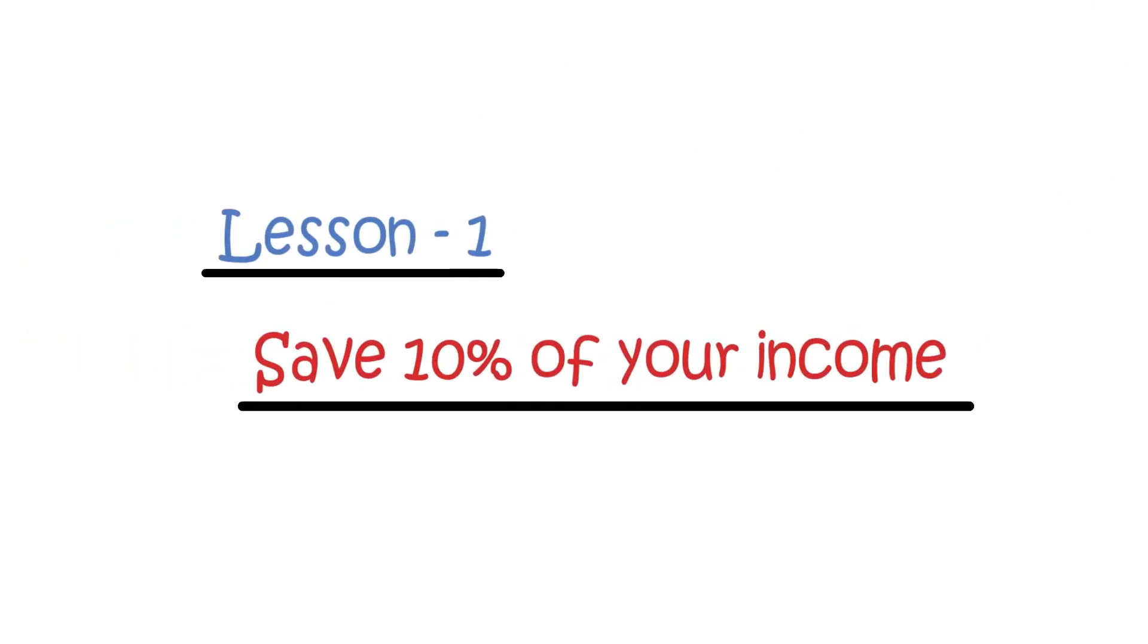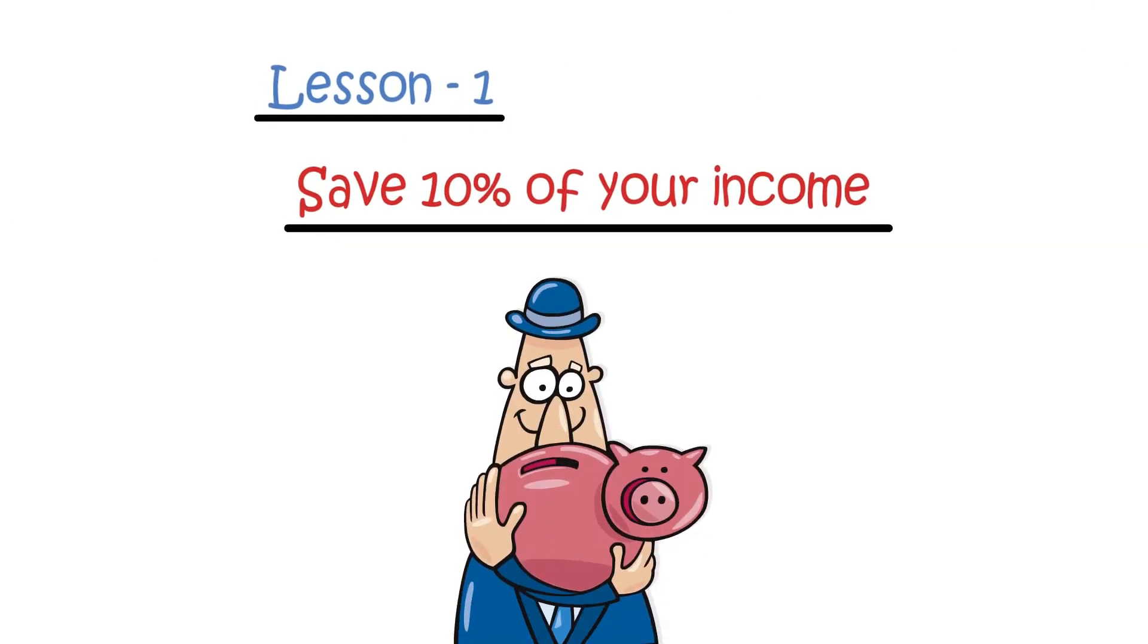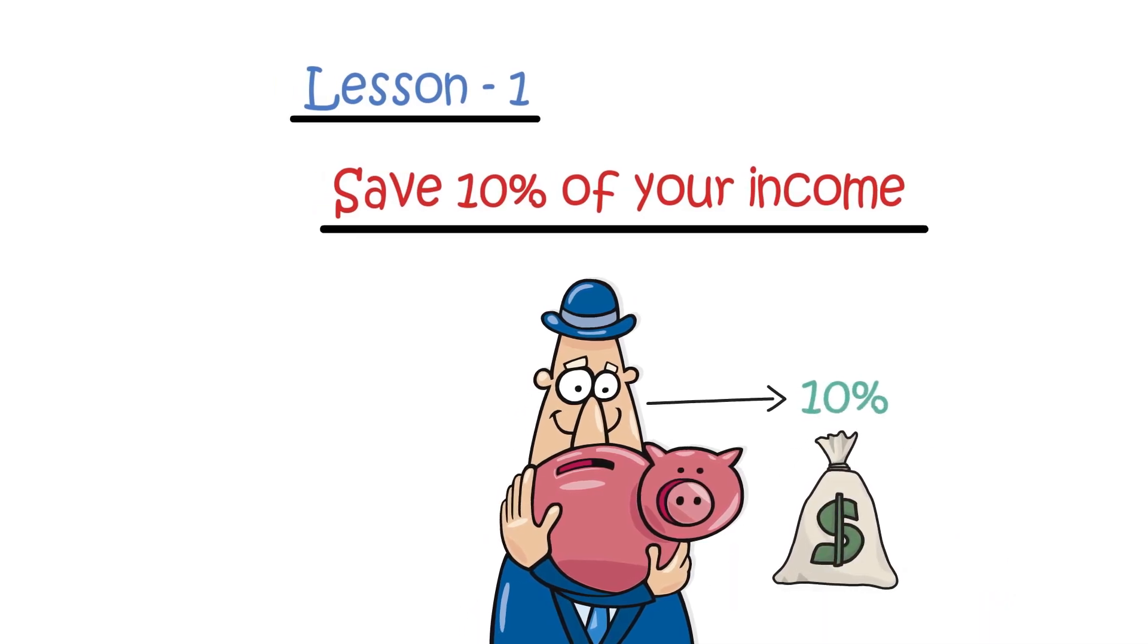Lesson number one, save 10% of your income. The first lesson taught to the people of Babylon was to save money. In fact, you should save 10% of what you earn. The logic is pretty basic.